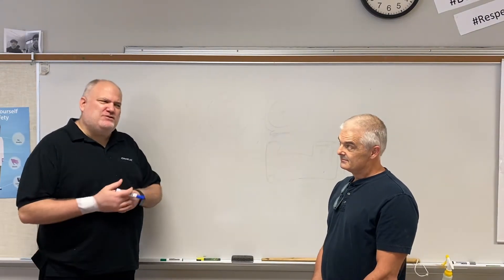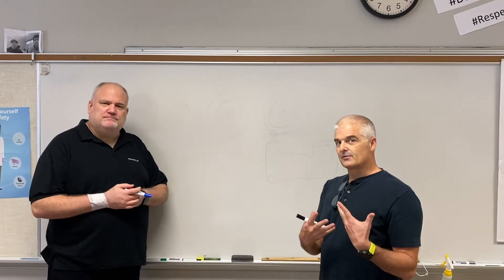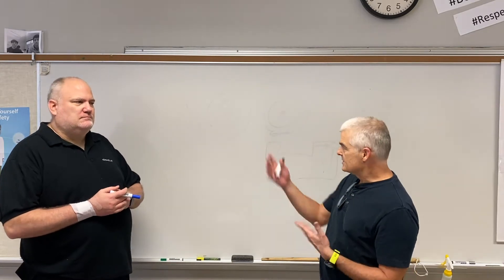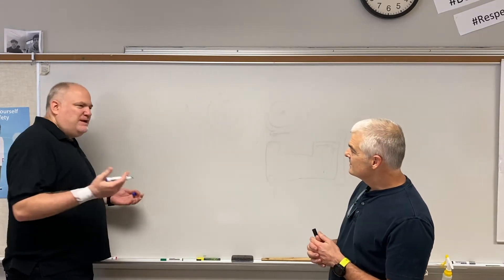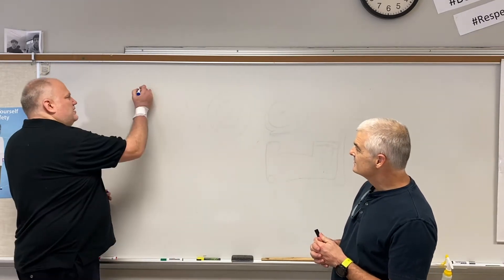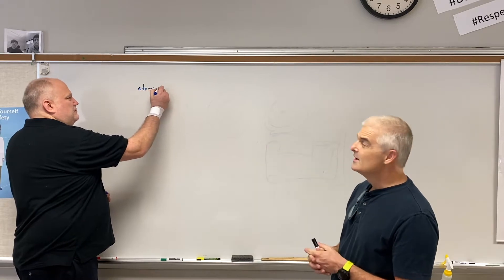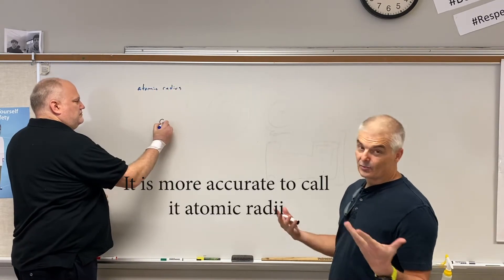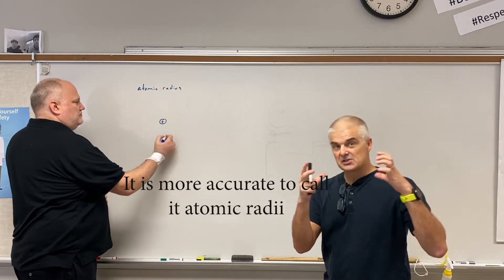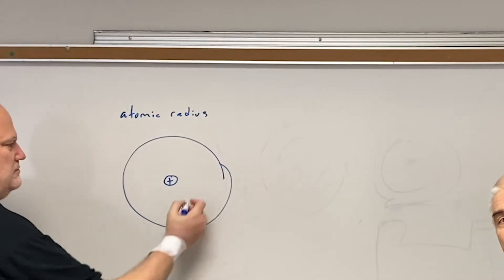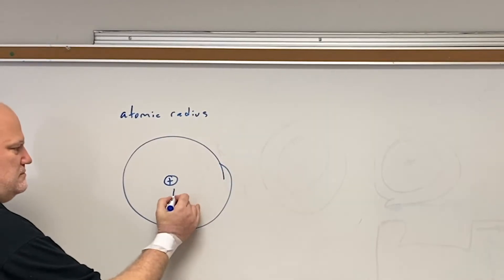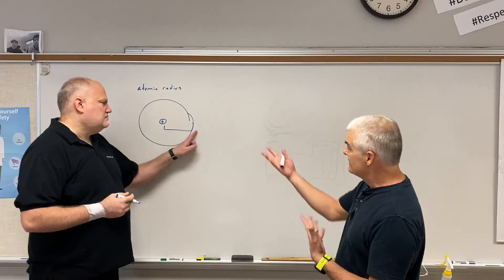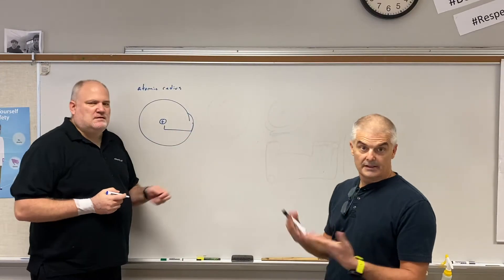There are three main trends we want to talk about today. Let's talk about the first one, which has to do with atomic size — atomic radius, we'll call it. So it's the radius of an atom. Think of an atom as a sphere. What is the size of the atom? We measure it by the radius of that atom.